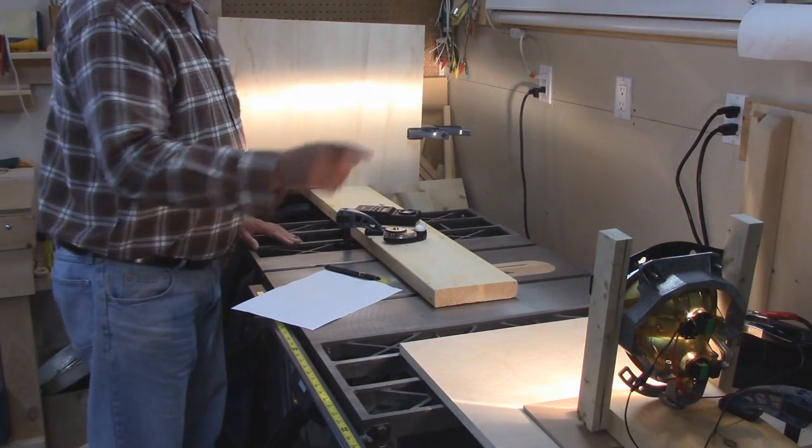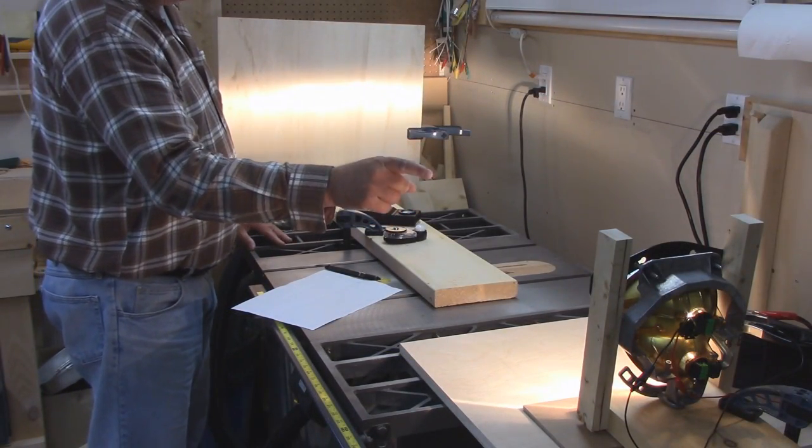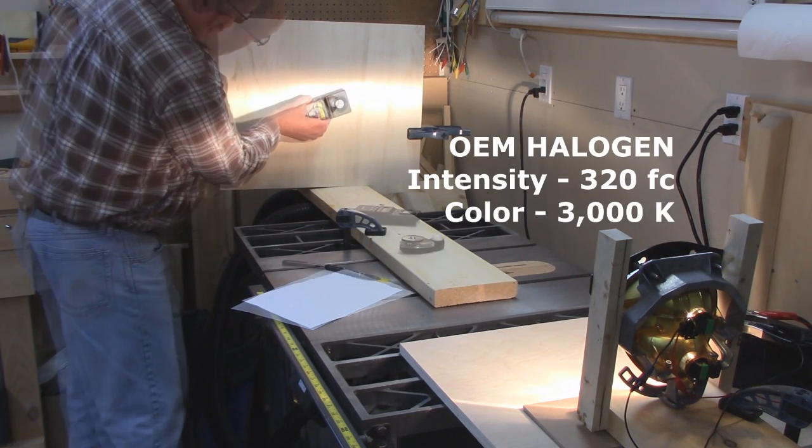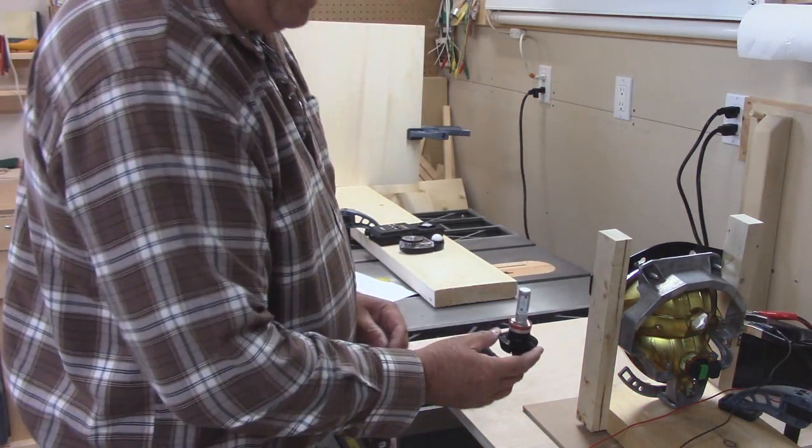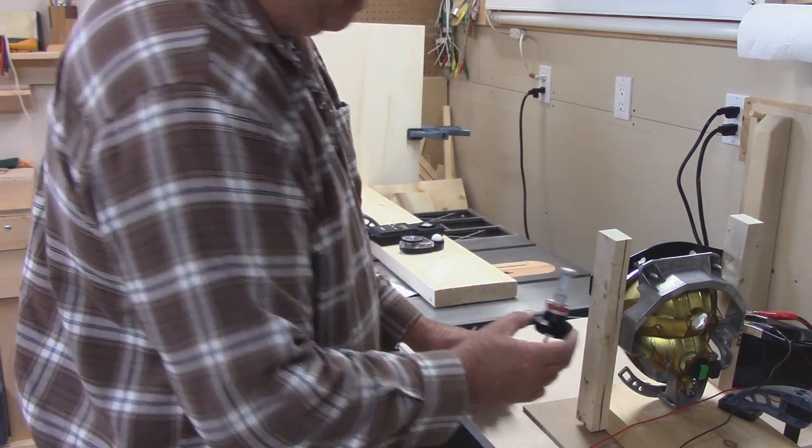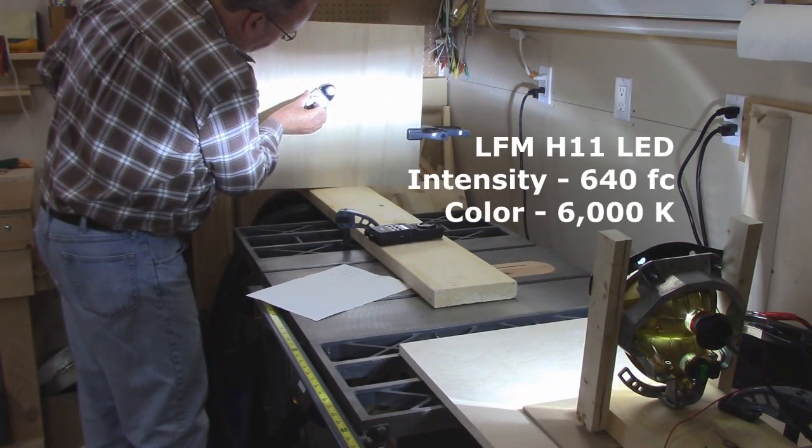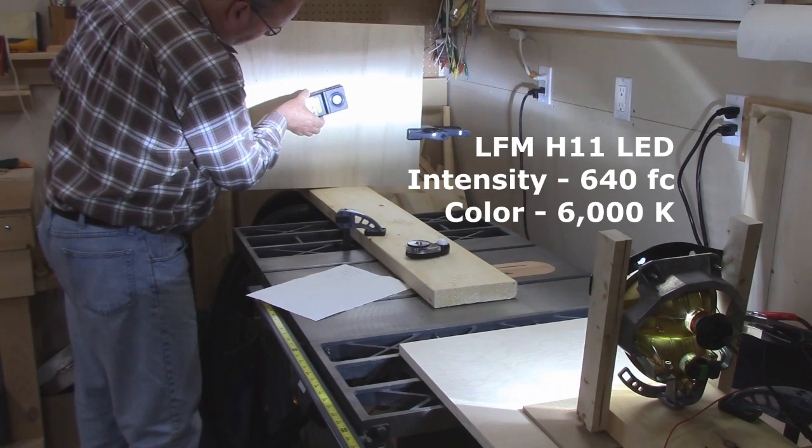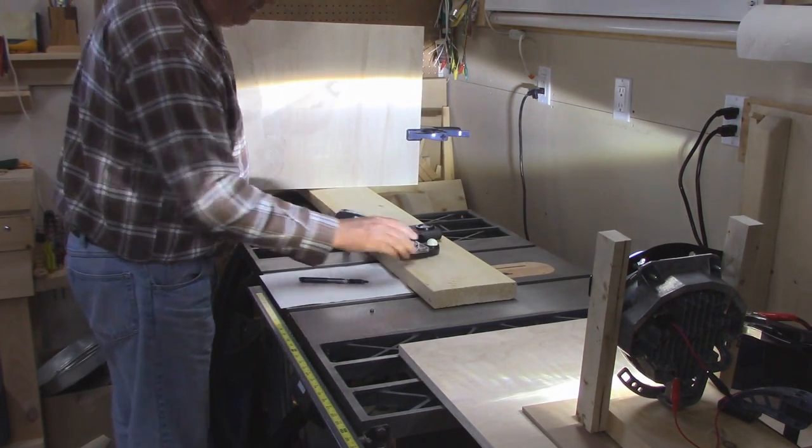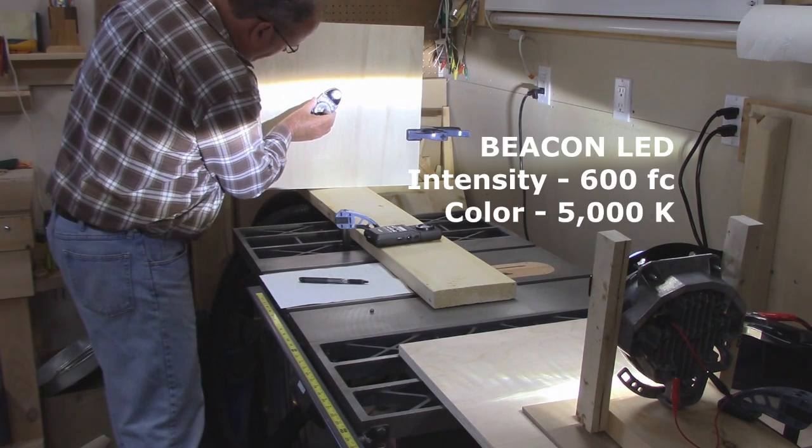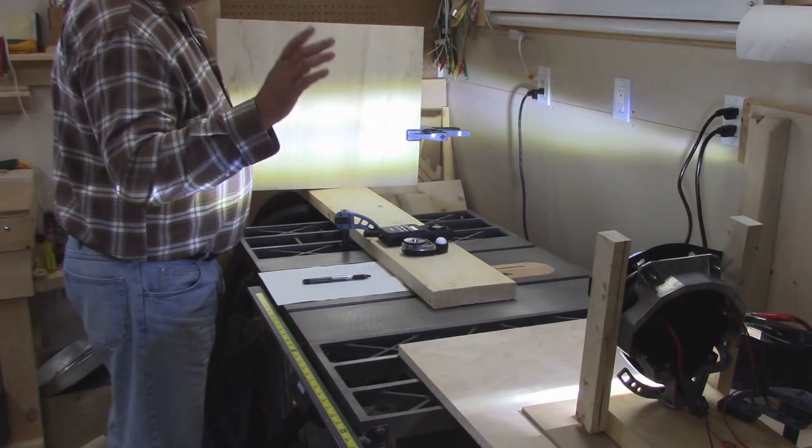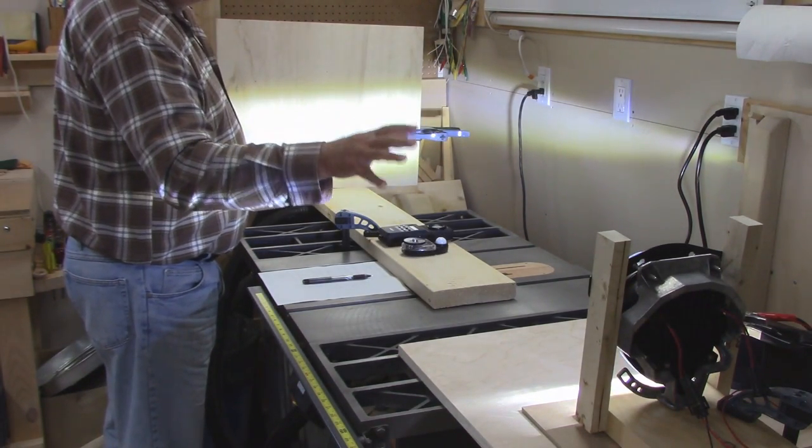The first light we're going to test is the quartz halogen OEM light that came with my bike. The next light we're going to try are the H11 LED replacement bulbs. This is the Victory Beacon LED headlamp. And finally, we have the LED complete unit from overseas.